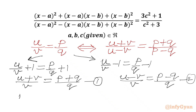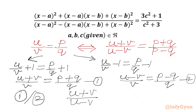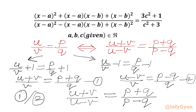Now we divide equation 1 by equation 2. On the LHS, v and v cancel, giving u plus v over u minus v. On the RHS, q and q cancel, giving p plus q over p minus q, which is our result.